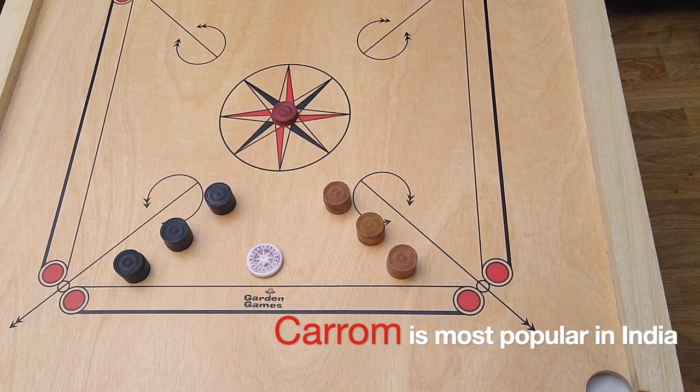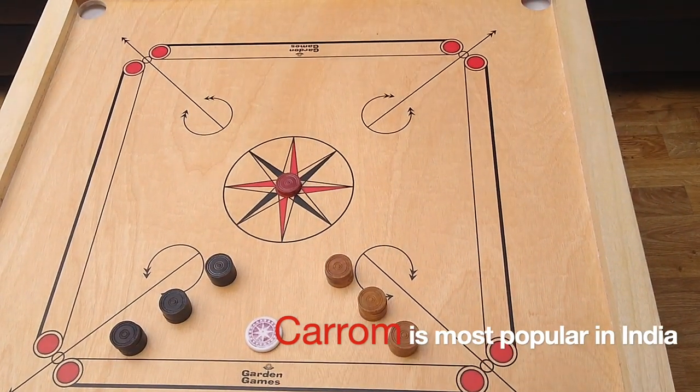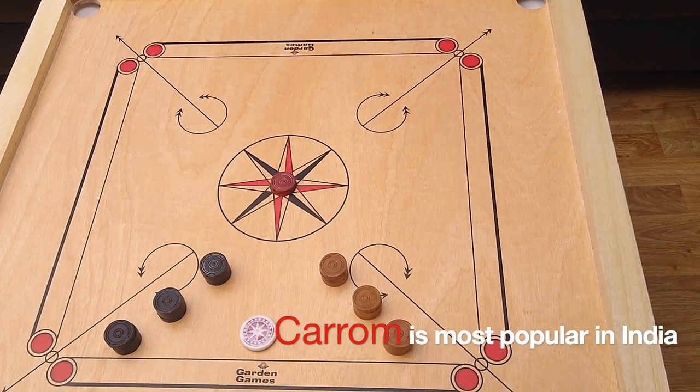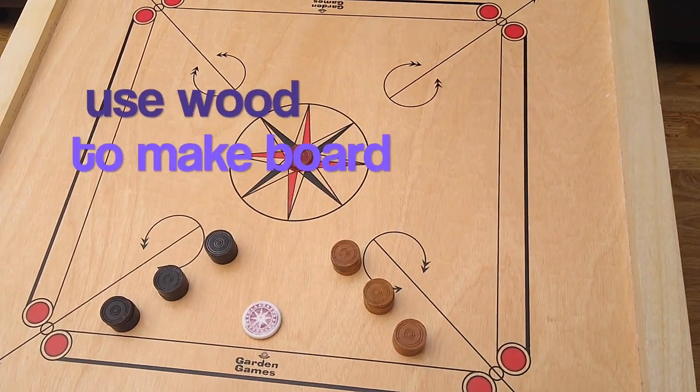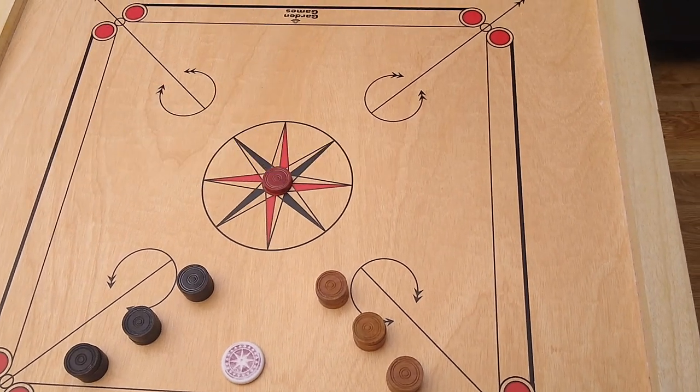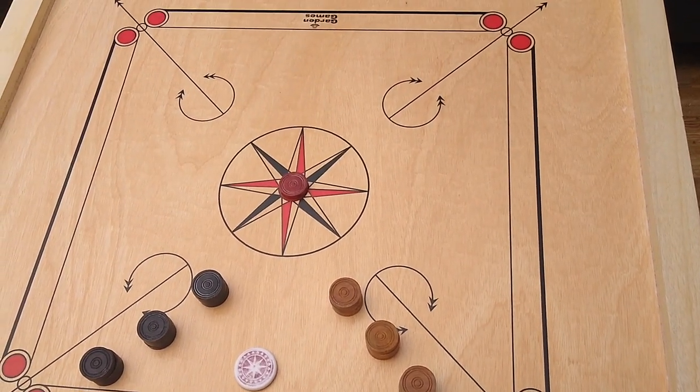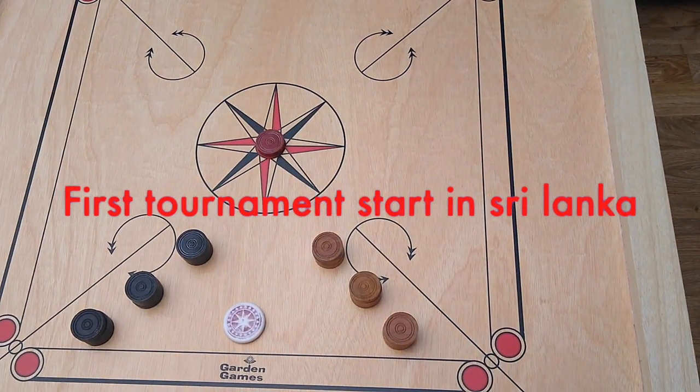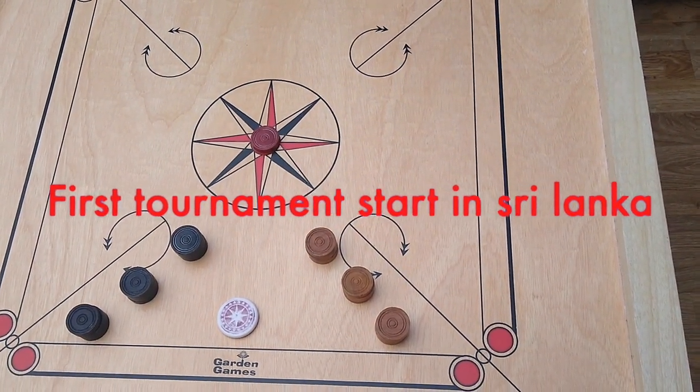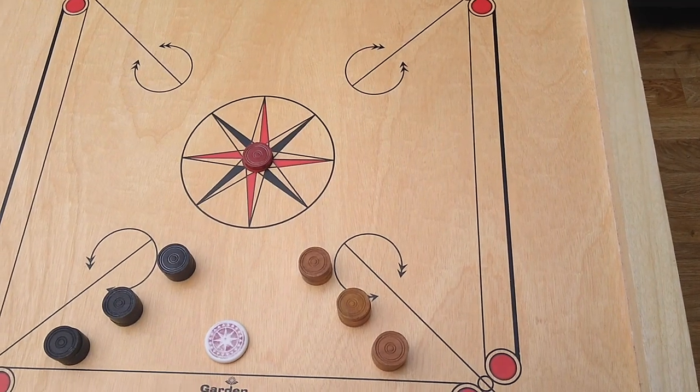Carrom is a most popular game in India and it was also originated there. Most Carrom boards are made using wood and in some places they are made of glass. The first tournament of Carrom was in Sri Lanka in 1935. The game of Carrom became most popular after World War II.